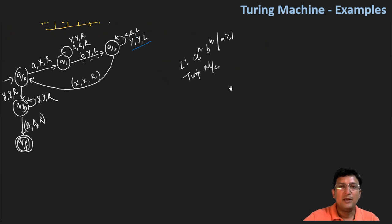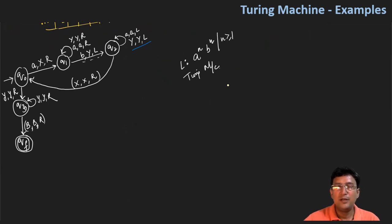This means that a and b are the same count — a will come first and then b will come. In today's lecture, we will look at the Turing machine's formal definition.